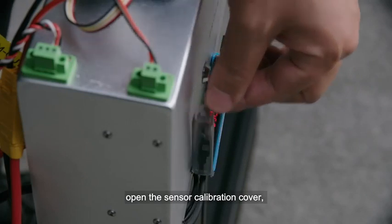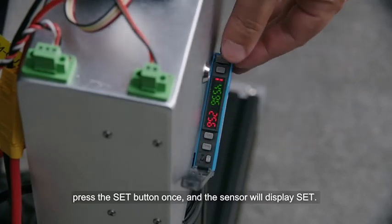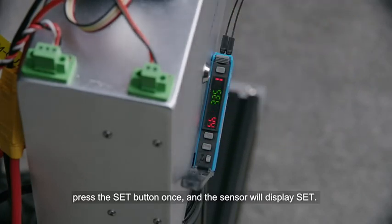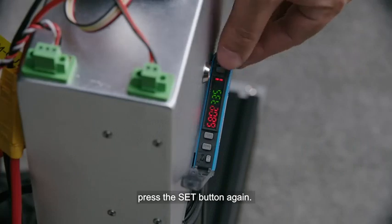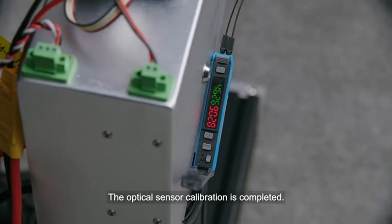Move the propeller away from the beam. Align the optical speed sensor beam with the non-sensing surface. Open the sensor calibration cover. Press the set button once and the sensor will display it. Move the optical speed sensor beam to the reflective sticker on the propeller. Press the set button again. The optical speed sensor calibration is completed.